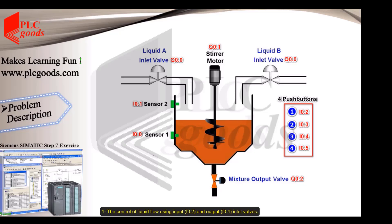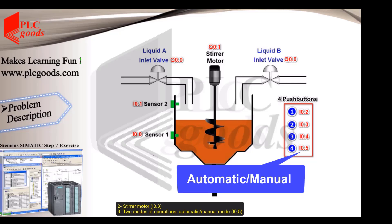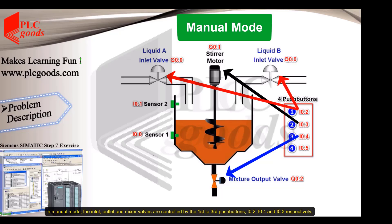One: The control of liquid flow using input IO2 and output IO4 inlet valves. Two: A stirrer motor IO3. Three: Two modes of operation, automatic and manual mode. In manual mode, the inlet, outlet, and mixer valves are controlled by the first to the third push buttons IO2, IO4, and IO3 respectively.